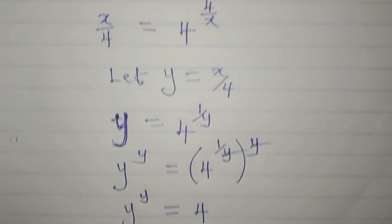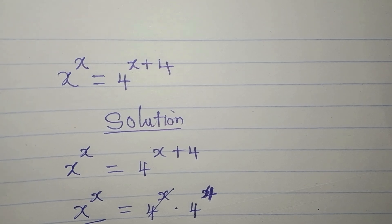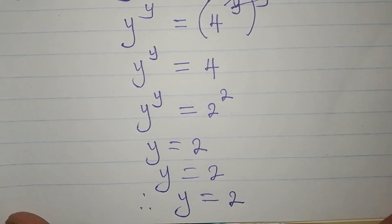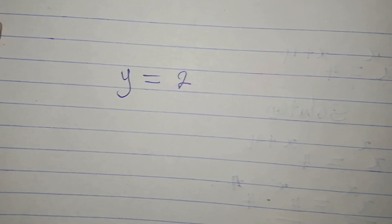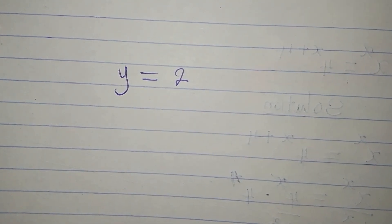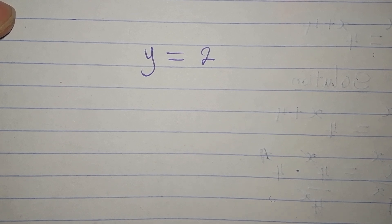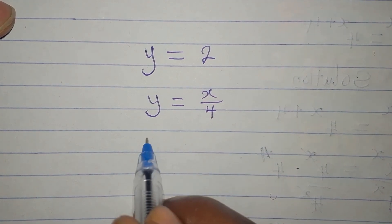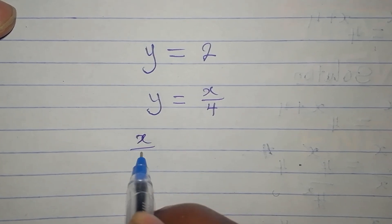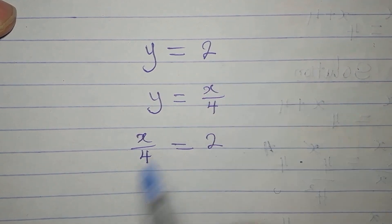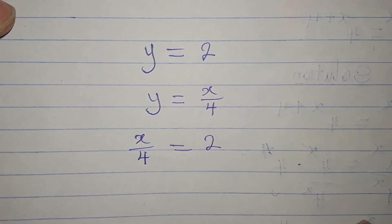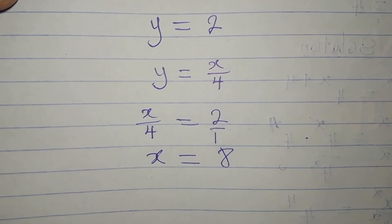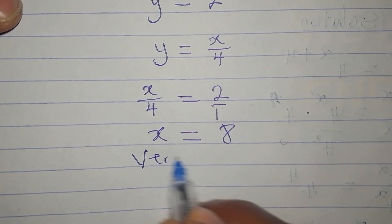The original equation has no y — we were looking for x. Going back, y equals 2 and y equals x over 4, so x over 4 equals 2. Cross-multiplying gives x equals 8. As always, let's verify our result.